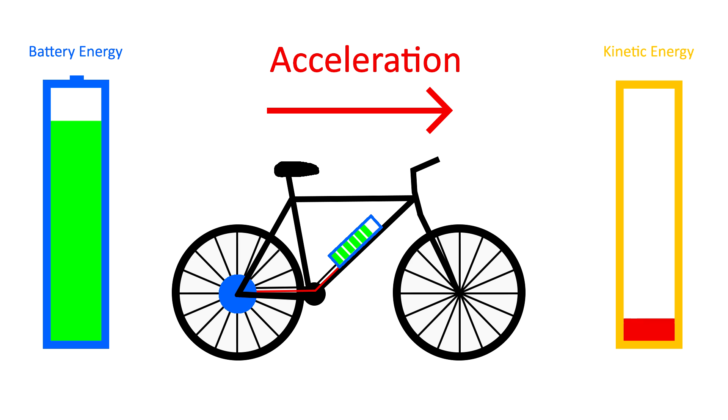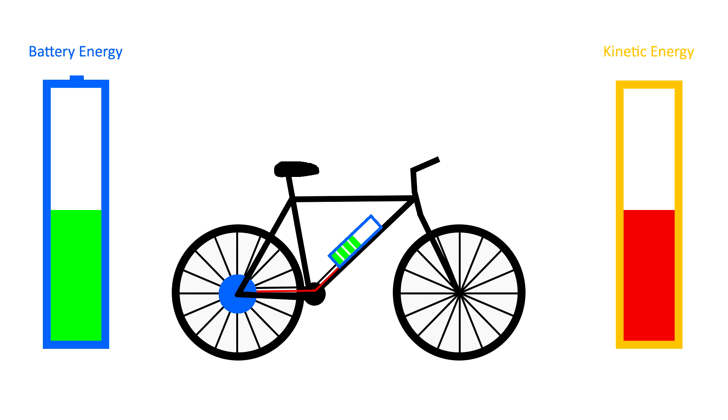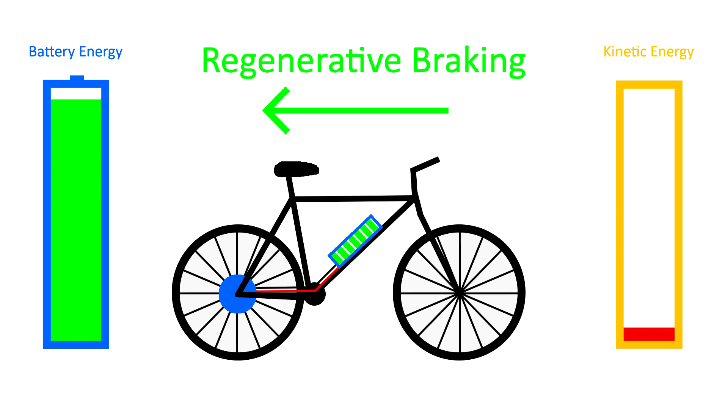When the bike accelerates up to speed the motor takes energy from the battery and converts it into kinetic energy. Then when the bike applies regenerative braking it uses the motor to convert the kinetic energy back into electrical energy in the battery. From the diagram you can see that the battery energy is back up to 100%. This would mean that the system was 100% efficient which is never really the case in the real world.